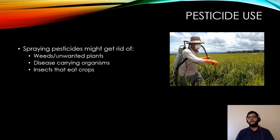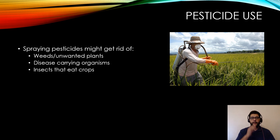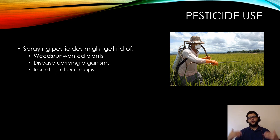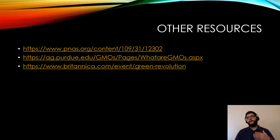Pesticide use is also important because crops are generally grown in monocultures. Pesticides get rid of unwanted plants and organisms that carry disease or eat crops. If a pest finds a field of its preferred crop, that's an endless buffet — it will grow in huge numbers. Spraying with pesticides is one way to control that.